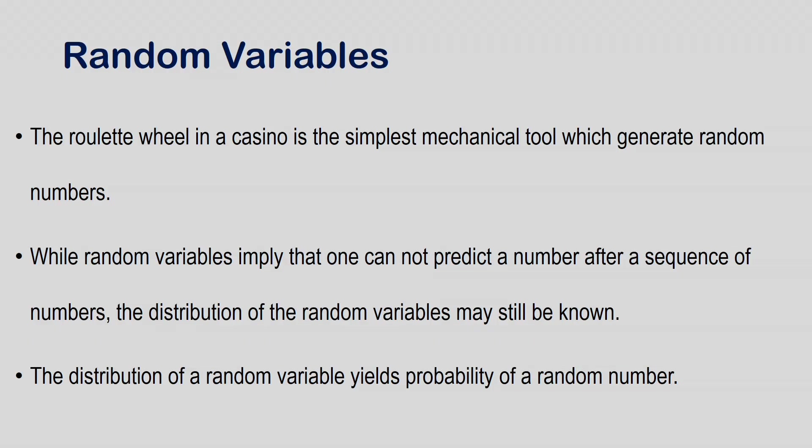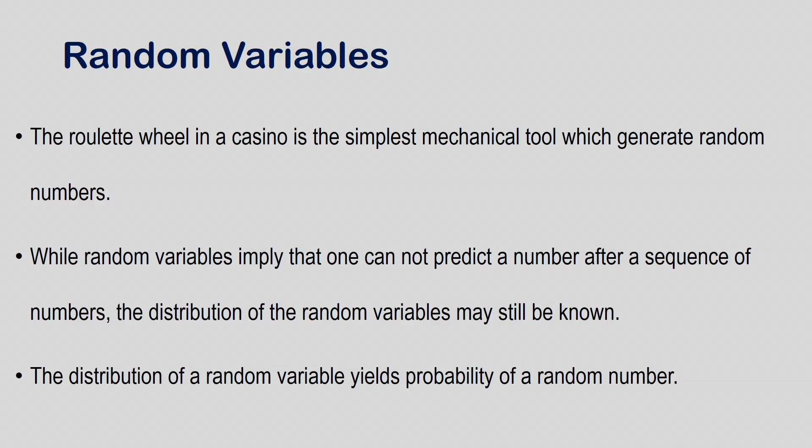If we want to choose a number, or rather want to predict a number after a given sequence of numbers, that cannot be done — it is completely random. We know the roulette wheel, the wheel that you have seen in casinos, is the simplest mechanical tool that can generate random numbers. This will be completely random; with each turn of the wheel, one would get a different number. While random variables imply that one cannot predict a number after a sequence of numbers, the distribution of the random variables may still be known — the region or the way they are distributed from some A to some B, or from 0 to 1, could still be known. This is a property of the random variable: distributions are often known.